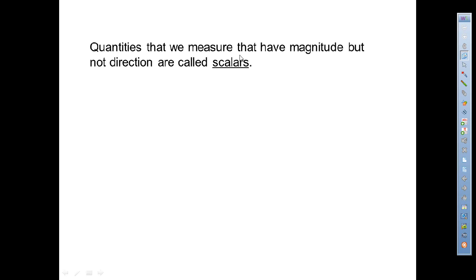Quantities that we measure that have magnitude but not direction are called scalars. In other words, it's just a magnitude — it doesn't matter what direction it's going in. If you're not worried about the direction and you're only worried about what the magnitude is, and it's not in a specific direction, it's called a scalar.